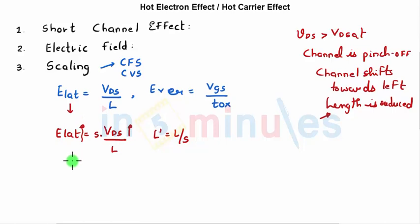Now in the previous clip we have also seen that the drift velocity is given by mobility into E lateral. We have seen this when we studied velocity saturation. This tells me that as E lateral keeps on increasing, my drift velocity of my electrons will keep on increasing.